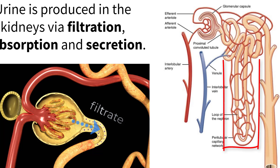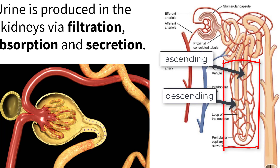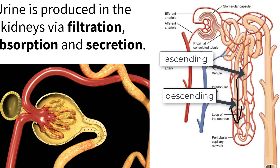This tube extends down from the cortex into the renal medulla within the loop of Henle. This loop has two parts, labeled as the descending limb and ascending limb. The descending limb of the loop of Henle is where filtrate moves away from the proximal convoluted tubule deeper into the medulla.